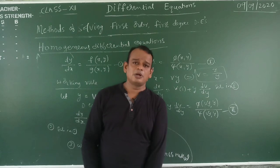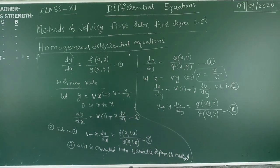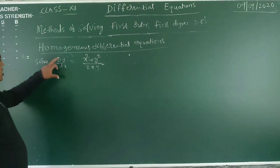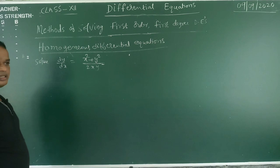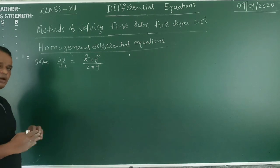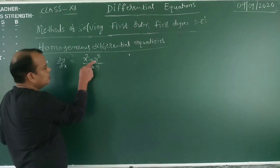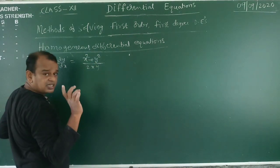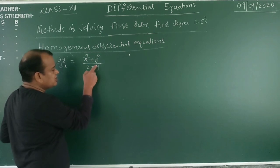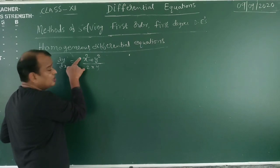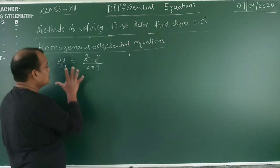Now we are going to the problem. See the problem — this is the type asked in the examination: dy/dx = (x² + y²) / (2xy). Solve it. Is it homogeneous or not? Numerator: x² has degree 2, y² has degree 2. Denominator: 2xy has degree 1+1=2. Both orders are equal — it is a homogeneous equation.